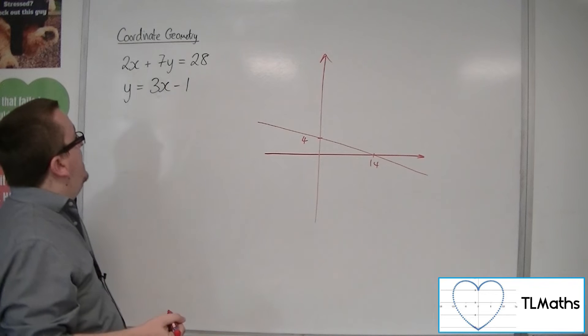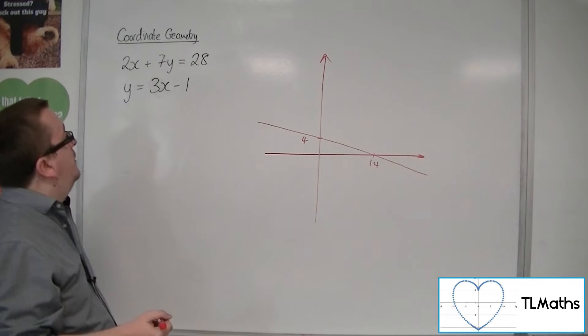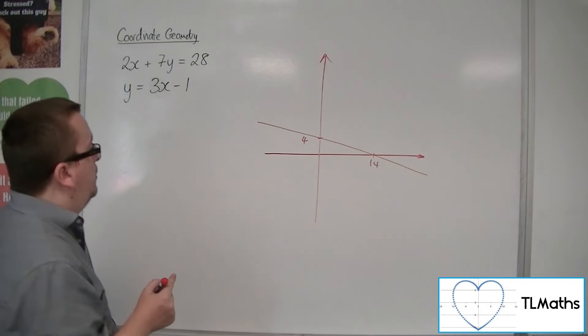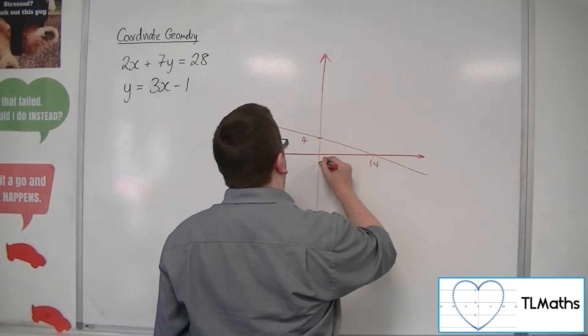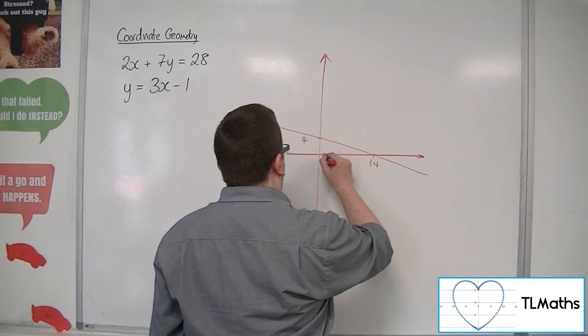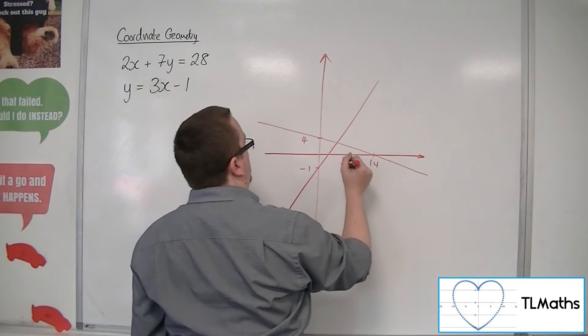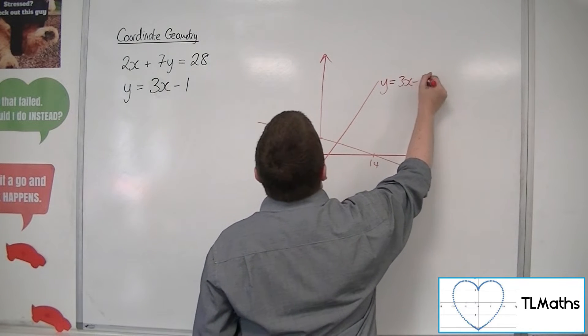And this line here, the y equals 3x minus 1, will have a gradient of 3, so relatively steep, certainly steeper than this one, going through minus 1 on the y-axis. So there's minus 1, and this is your y equals 3x minus 1.